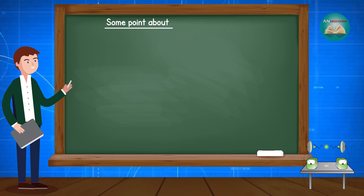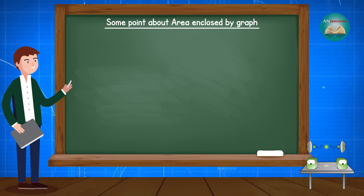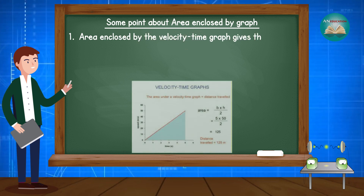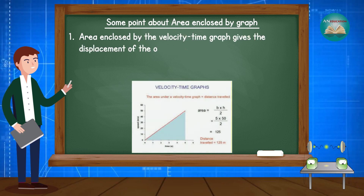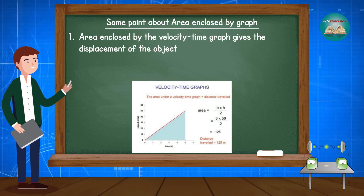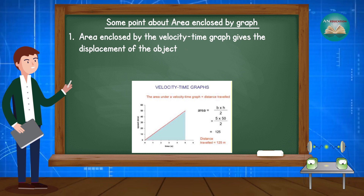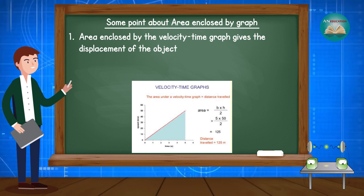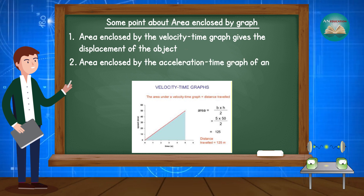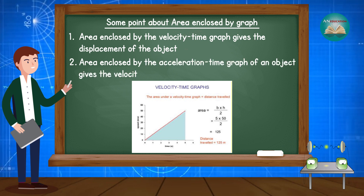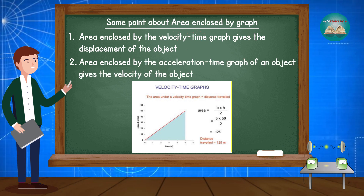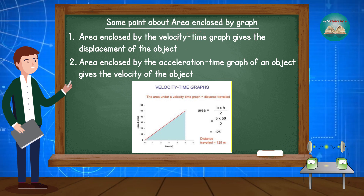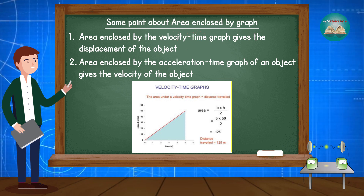Let's discuss some points about the area enclosed by the graph. First, the area enclosed by the velocity-time graph gives the displacement of the object. Second, the area enclosed by the acceleration-time graph gives the velocity of the object.